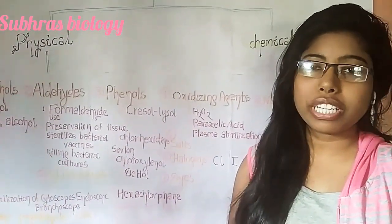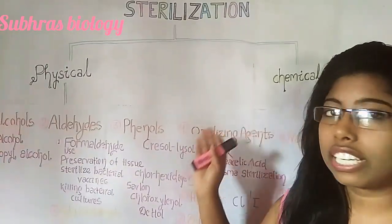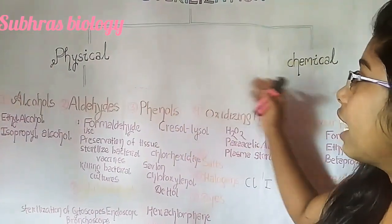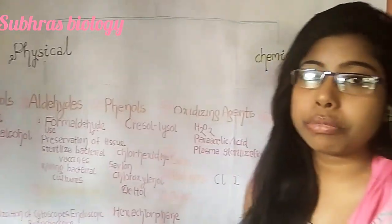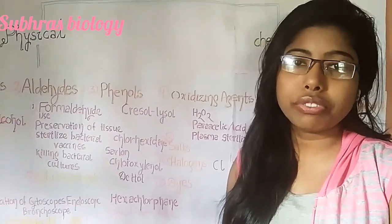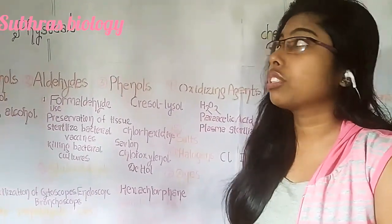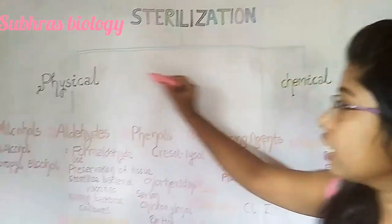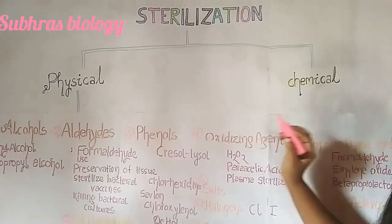Hello friends, welcome to a new video of Subhana's Biology. Today we are going for the second unit of the sterilization chapter. We already discussed physical sterilization in the last class. For your recall, sterilization is a process by which any article, surface, or medium is made free from all microorganisms. Sterilization is divided into two types: physical sterilization and chemical sterilization.